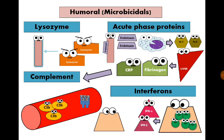The last humoral factors are type 1 interferons — interferon alpha and interferon beta. They are produced in response to viral infection and protect neighboring cells from being infected by the virus by preventing viral replication.